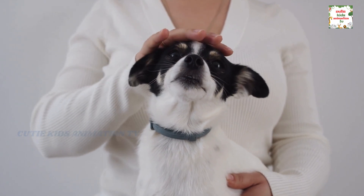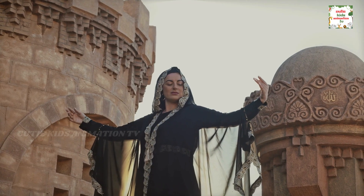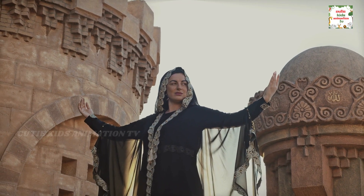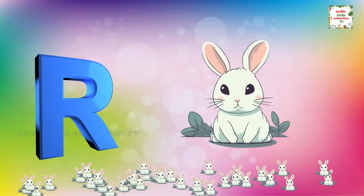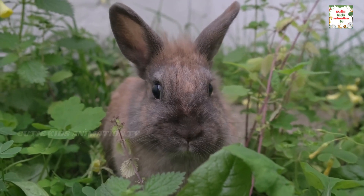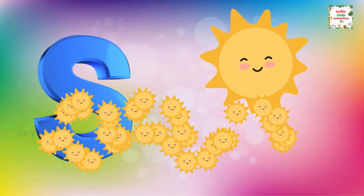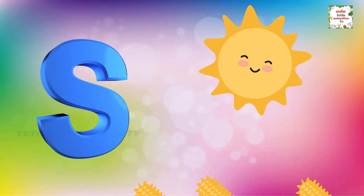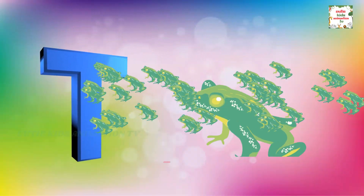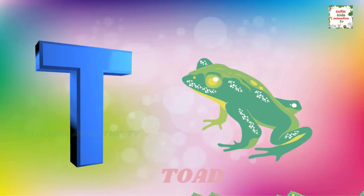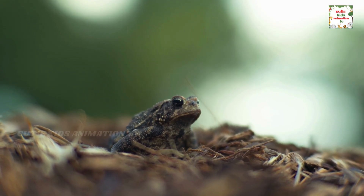Q is for Queen, Q-Q-Queen. R is for Rabbit, R-R-Rabbit. S is for Sun, S-S-Sun. T is for Toad, T-T-Toad.